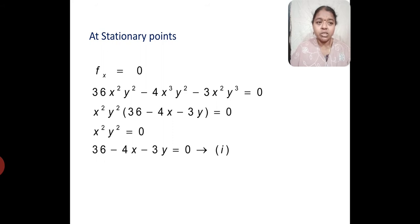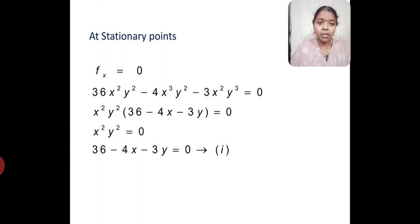To find the stationary points, the conditions are fx equal to 0 and fy equal to 0. Setting fx equal to 0: 36x²y² minus 4x³y² minus 3x²y³ equal to 0. Since x²y² is common, after factoring we get x²y²(36 minus 4x minus 3y) equal to 0. This gives x²y² equal to 0 and the equation 36 minus 4x minus 3y equal to 0. Let's call this sub-equation 1.